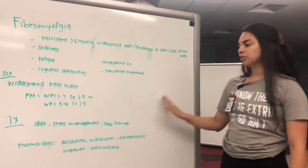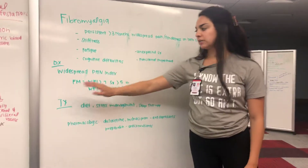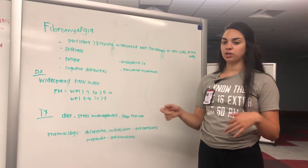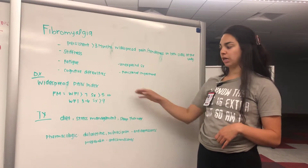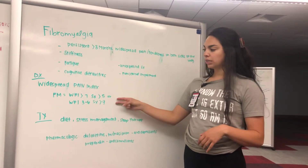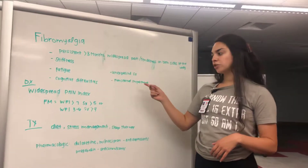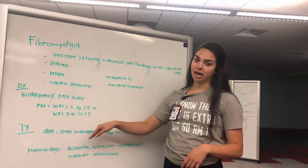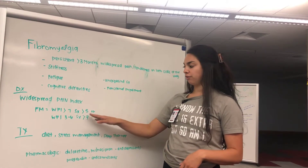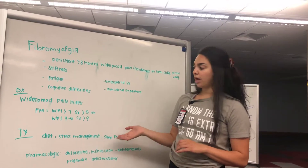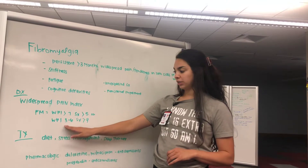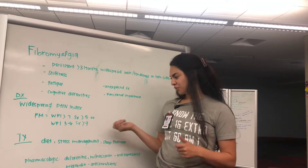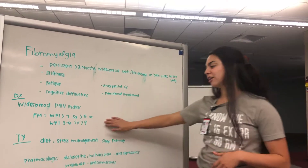You want to rule out other conditions first, of course. For diagnosis, you'll use the Widespread Pain Index — a chart of 19 areas where patients mark where they're having pain. There are two diagnostic categories: a Widespread Pain Index greater than seven with symptom severity greater than five, or a Widespread Pain Index of three to six with symptom severity greater than nine.